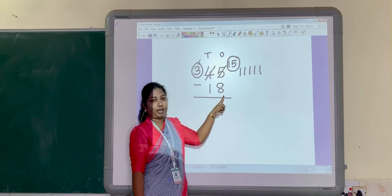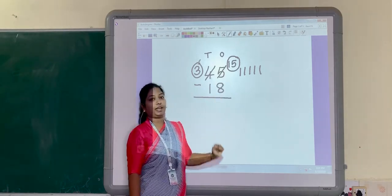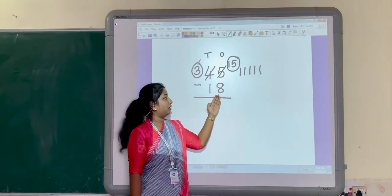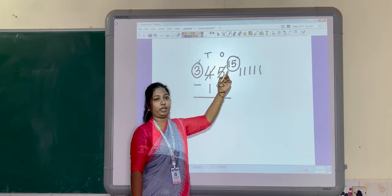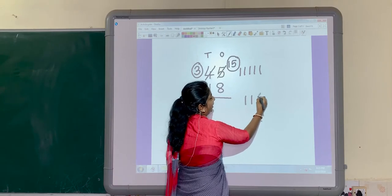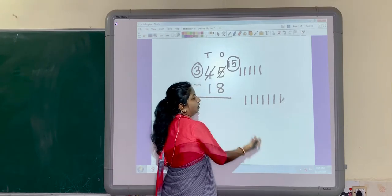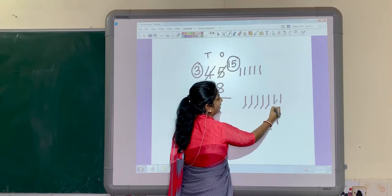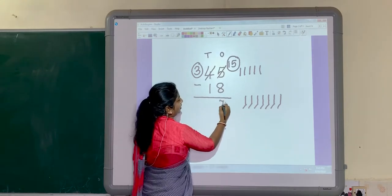15 minus 8. Now, how to do this? Count after 8. After 8, which number is there? 9. From 9 to 15, count with me: 9, 10, 11, 12, 13, 14 and 15. How many lines are there? 1, 2, 3, 4, 5, 6, 7. So, here, answer is 7.